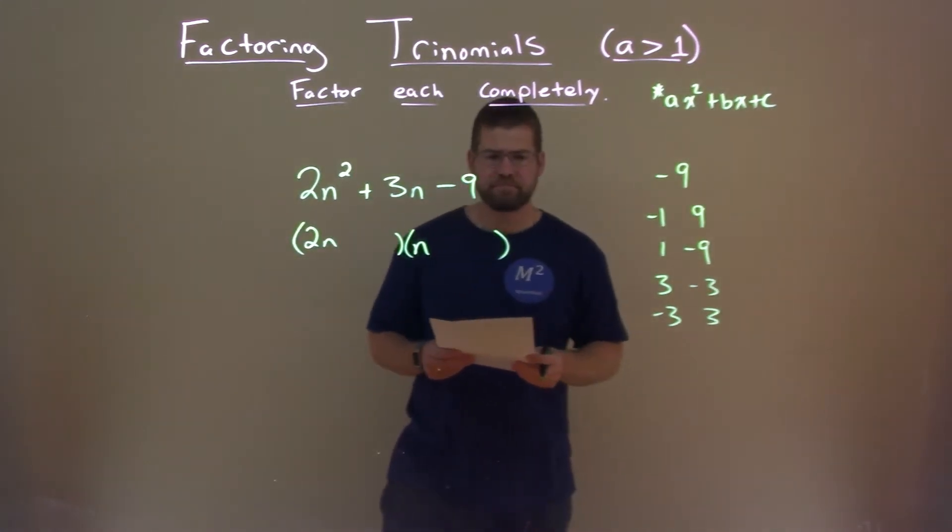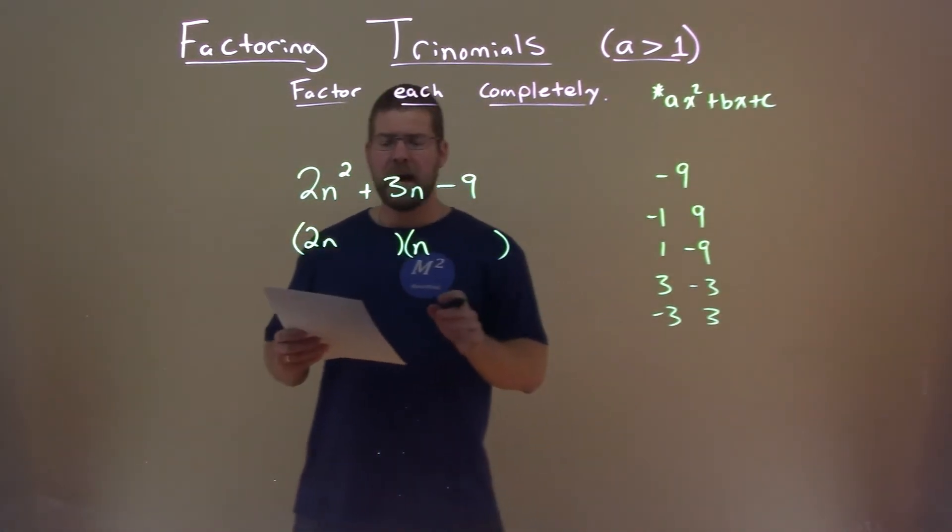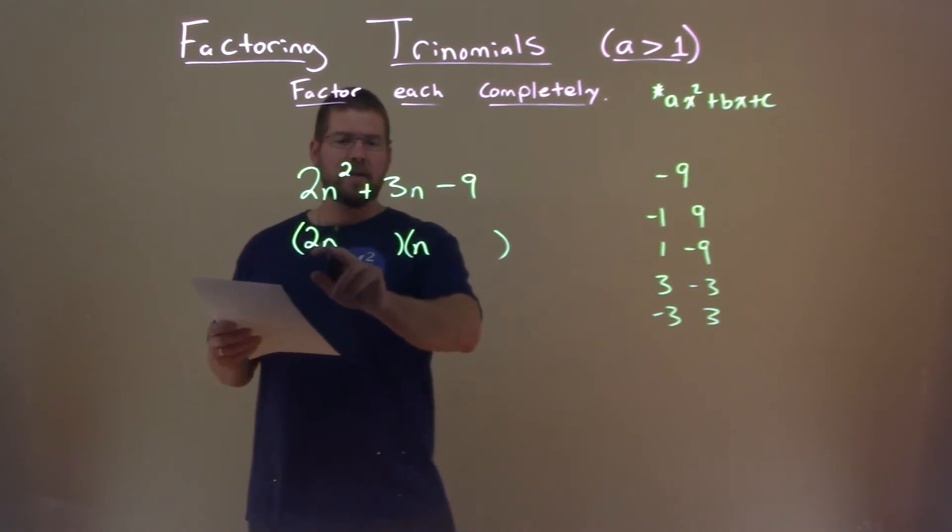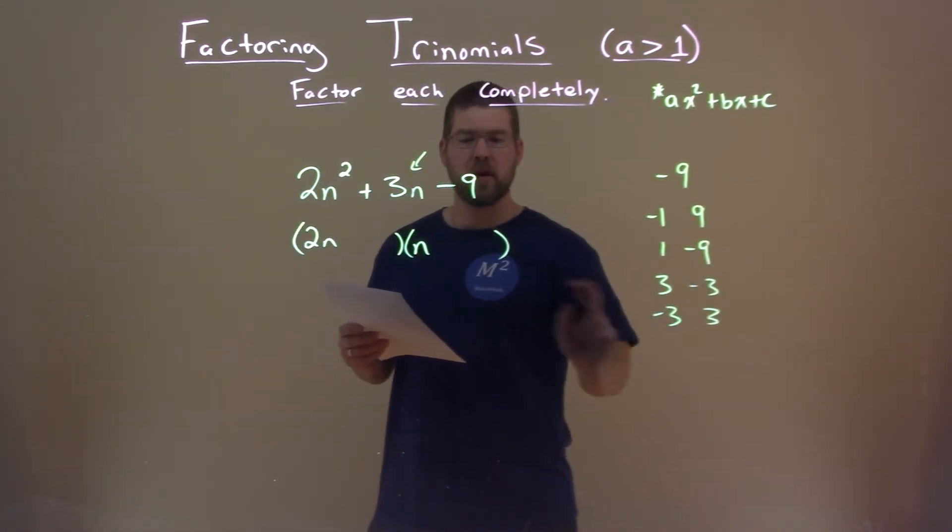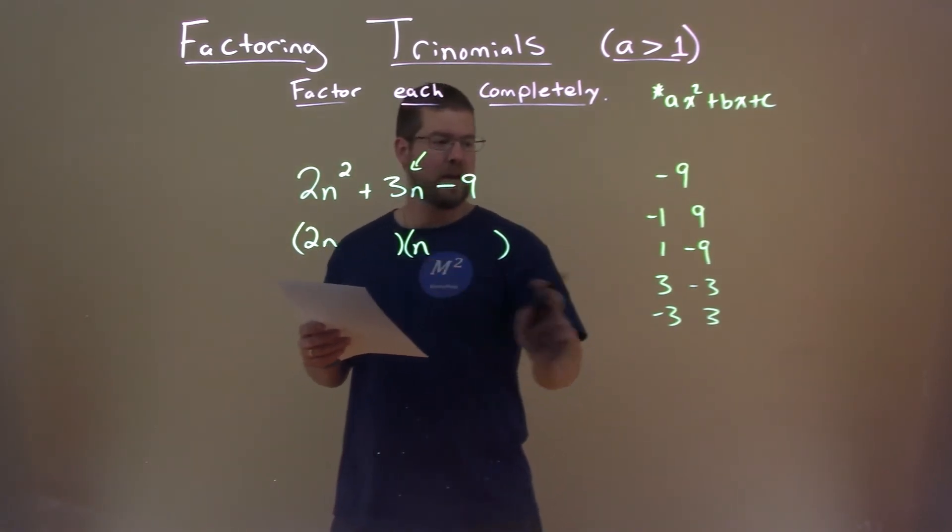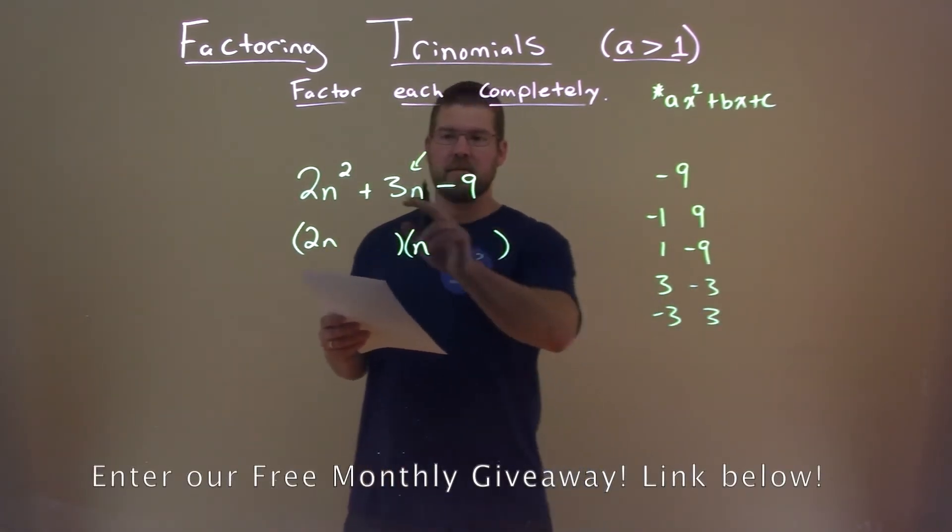Okay, so we have a list of the two numbers that multiply to be negative 9. Now we have to find out what 2 times one of these numbers plus 1, the coefficient for this n, times the other number, gets us a positive 3.